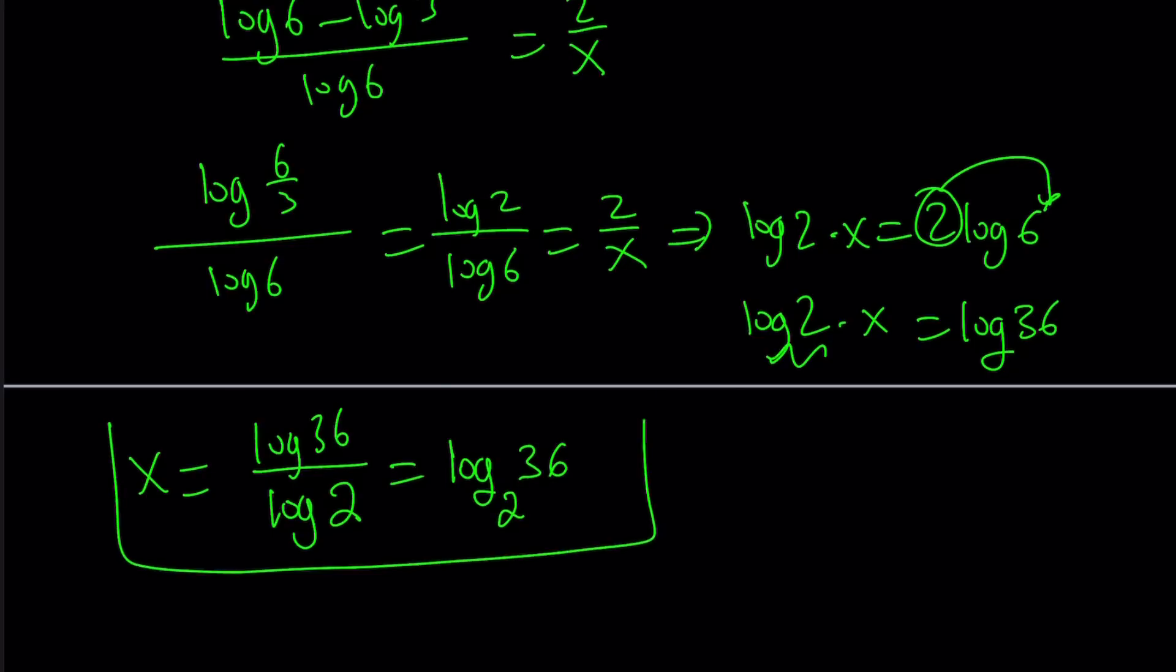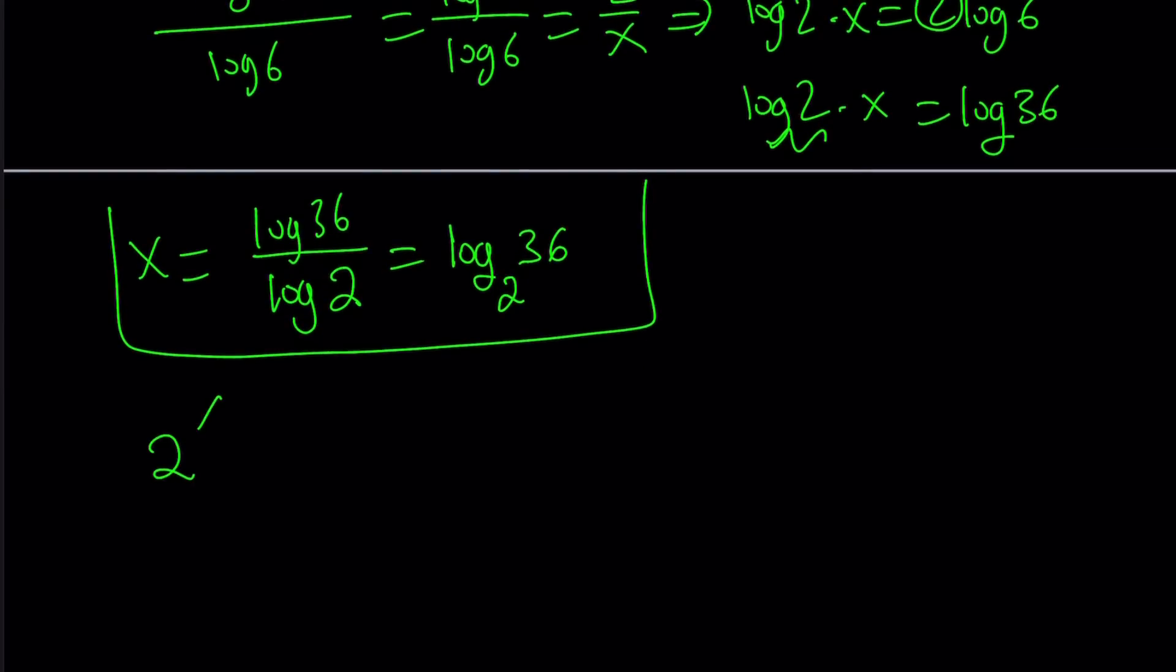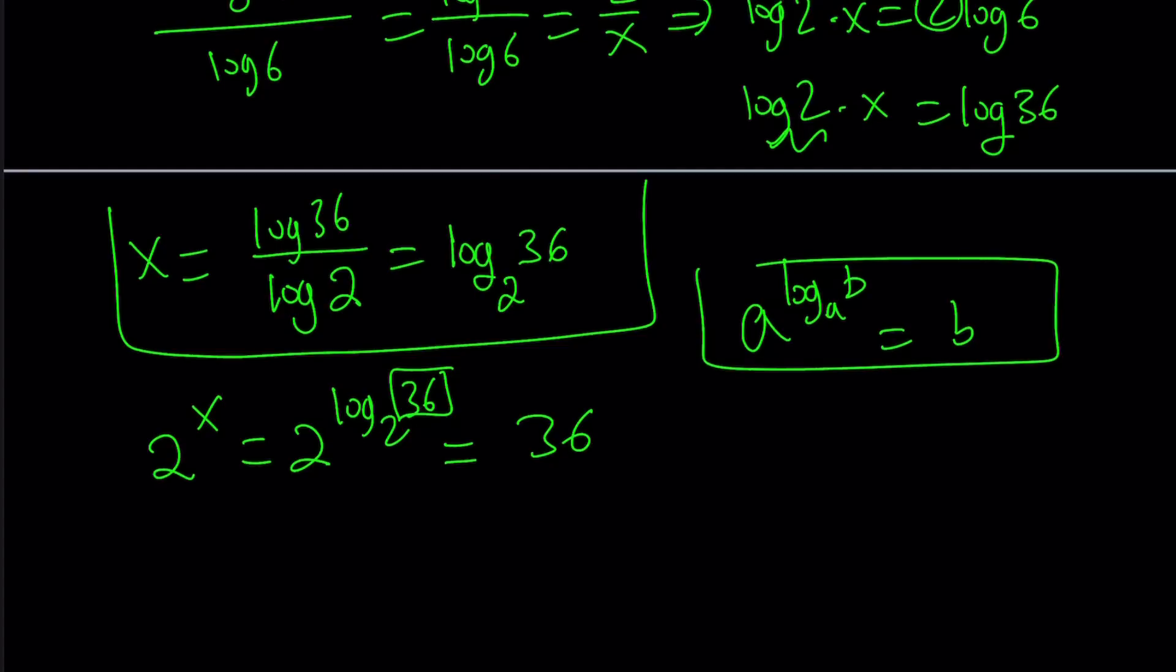But we're not looking for x. We're looking for 2 to the power x. So 2 to the power x is going to become 2 to the power log 36 but base 2. So that's going to be 36. Because we have the rule a to the power log b. If you have base a then this becomes b. That's the property we used here. So the answer is 36.